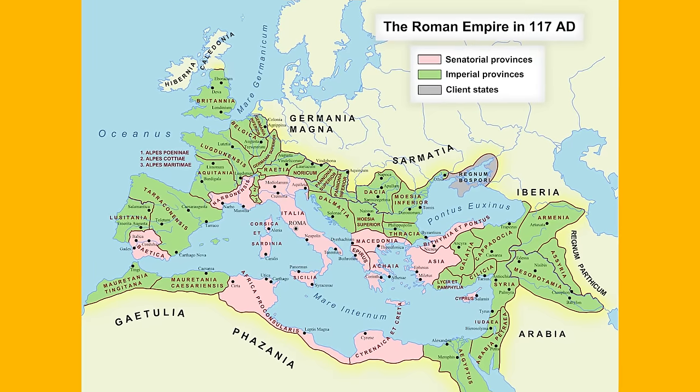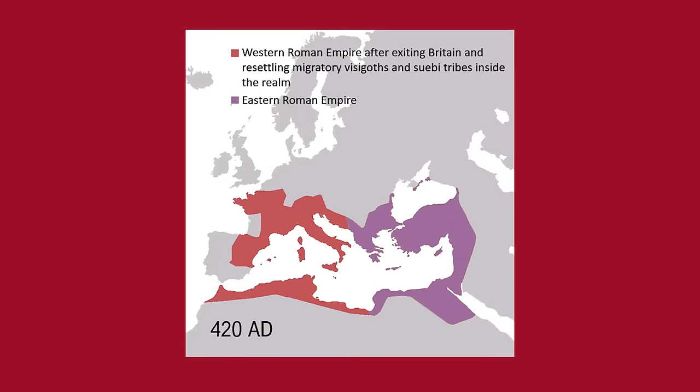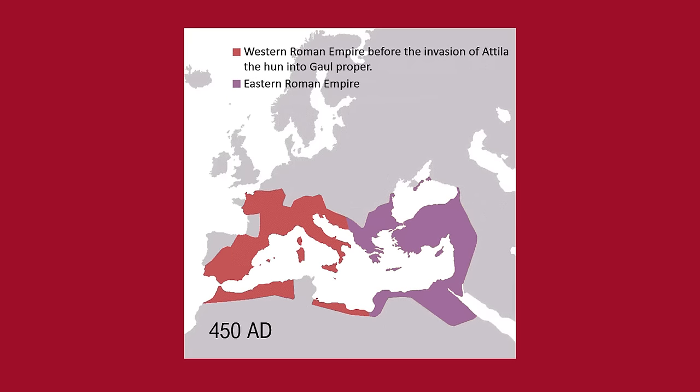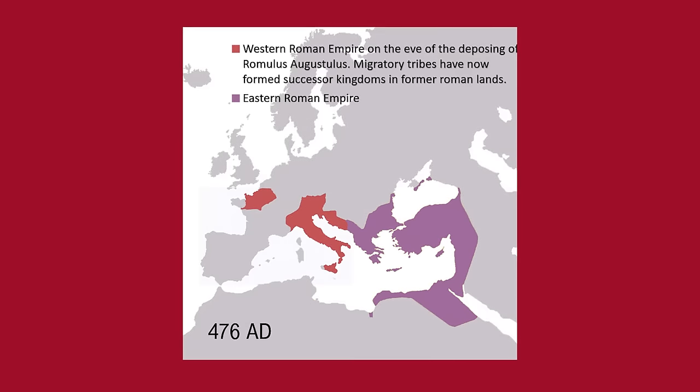Nothing lasts forever. The Western Roman Empire collapsed in the 5th century AD, when it was overrun by various Germanic peoples. Now that we have a better understanding of the different phases of ancient Rome, let's turn our attention to its genetic makeup.